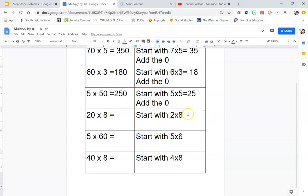All right, 20 times 8. Start with 2 times 8. Take the 0 off and start with 2 times 8 equals 16. Then you're going to want to go ahead and add the 0 to the end, so you will get 160 for your answer.